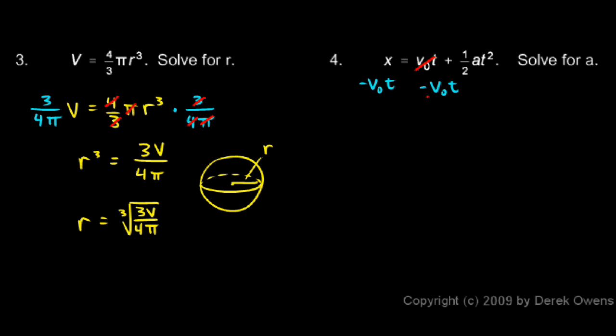And on the right, the v0t and the minus v0t will cancel each other out. And I'm left with x minus v0t on the left equals 1 half at squared.